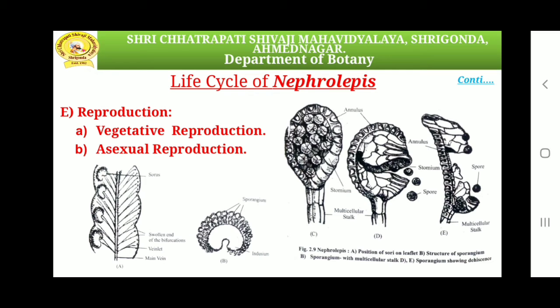Along the periphery it shows a distinct incomplete ring of cells which is vertically placed, known as annulus. The cells of the annulus are thick and brown along the inner tangential and radial walls, while the outer wall is slightly thin. On one side of the capsule the annulus is replaced by large, thin-walled, transversely arranged elongated cells called stomium. The sporangium contains 16 diploid spore mother cells. At maturity each spore mother cell undergoes reduction division (meiosis), forming a tetrad of four haploid spores. Therefore each sporangium contains 64 spores.